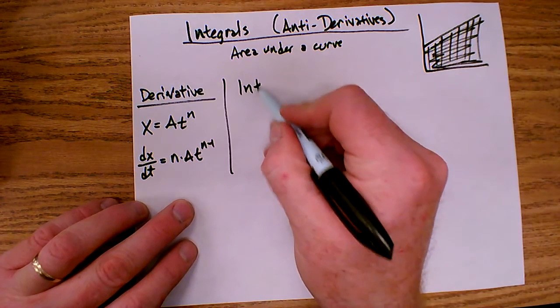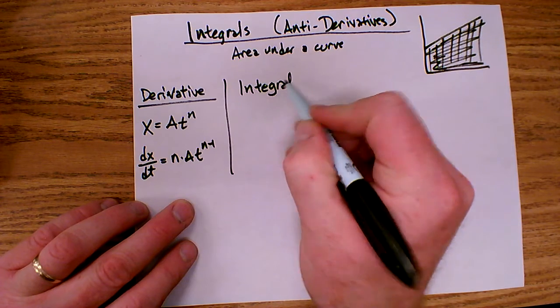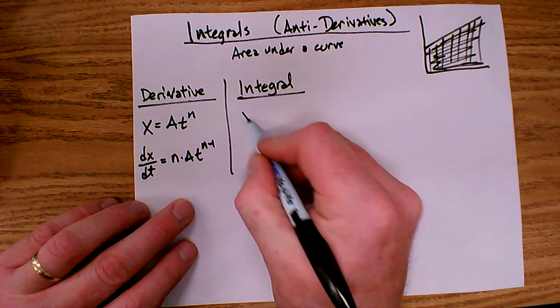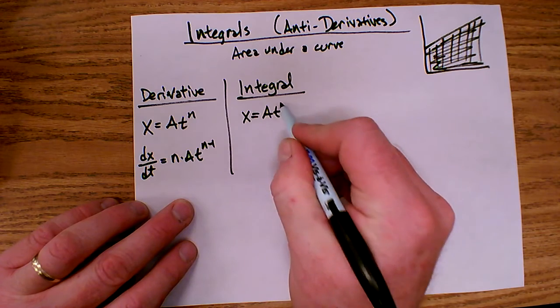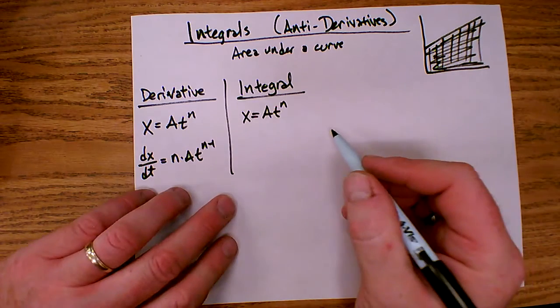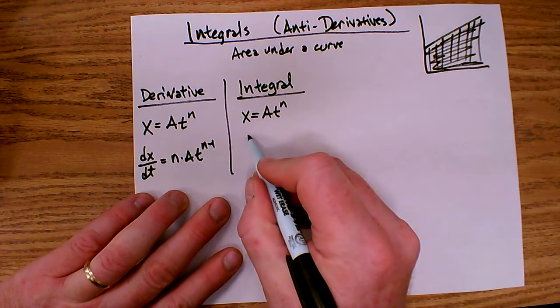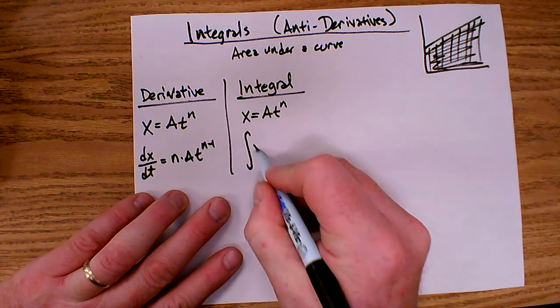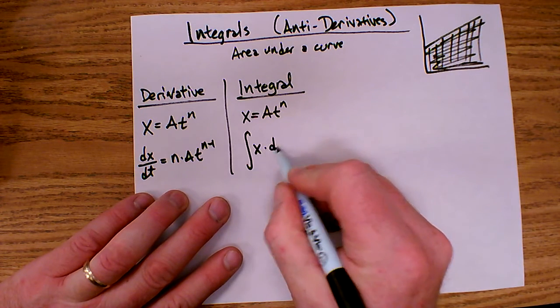To take an integral, or an antiderivative, we're going to take those same two steps, we're going to do them in reverse. So let's start again with x equals at to the n. But this time, the notation for integral looks a little interesting. It's this symbol right here, kind of a stretched out s, of x dt.